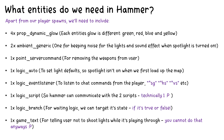Within our Hammer map we need four prop dynamic glows. We need two ambient generics for sound, a point server command for entering commands, and one logic auto so we can set defaults when the map is loaded. We need a logic event listener to listen out for events in the game, a logic script to hold our reference to scripts, a logic branch for logic to check what state it is, and a game text which will display text to the screen.